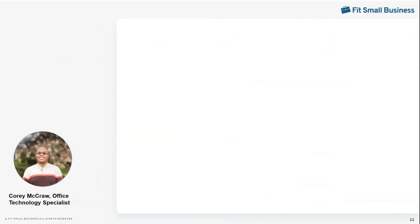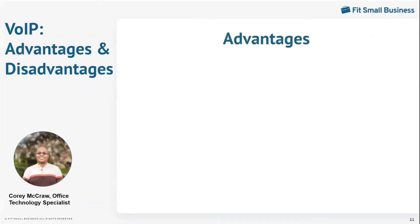Now that you're a bit more familiar with some of VoIP's most useful features, let's take a look at the advantages and disadvantages of the technology. VoIP brings the omnichannel into reality. Unlike landlines, you can reach your customers where they prefer to be reached. For example, most providers, like RingCentral, Nextiva, and Dialpad, allow you to make VoIP calls, but also allow you to video conference and text as well. Some providers, like Nextiva, also allow you to reach out via social media.